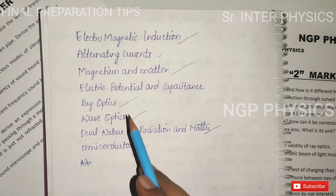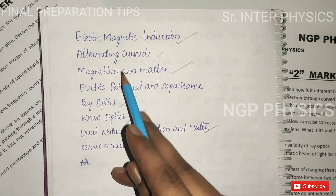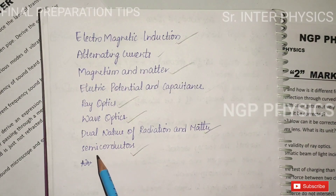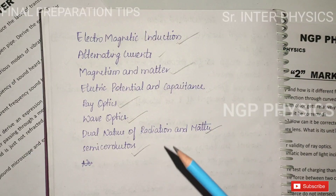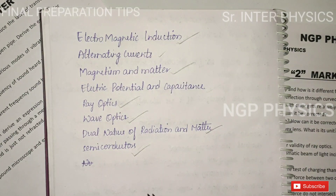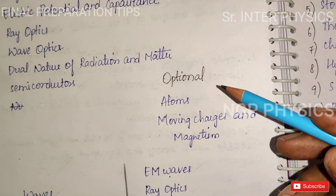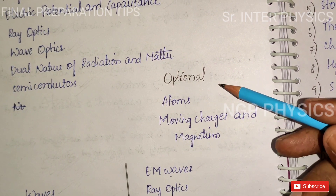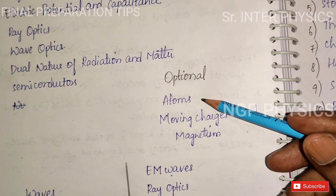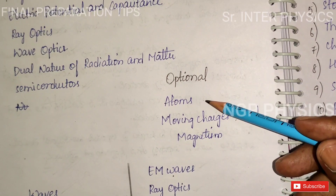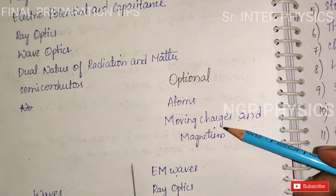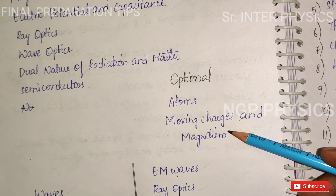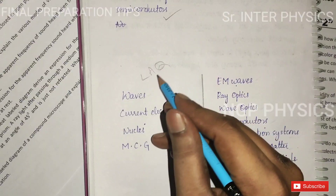The next topics for SAQs include impact parameter, excitation energy and moving charge systems, and force between two parallel conductors or MCG.